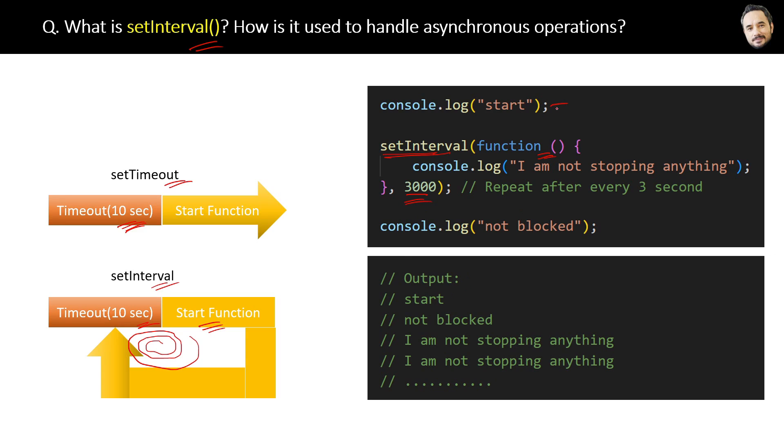See, first 'start', then 'not blocked', because setInterval is also an asynchronous operation and it will not block the next task. And then after three seconds, 'I am not stopping anything' - this line will be printed by the setInterval method. Now the difference is that again after three seconds, this anonymous function will execute again. The setInterval method will execute this anonymous function again and again after every three seconds.